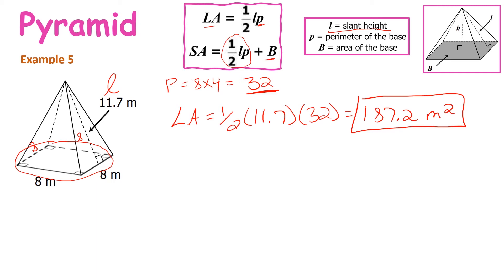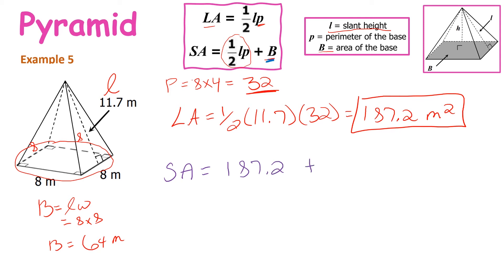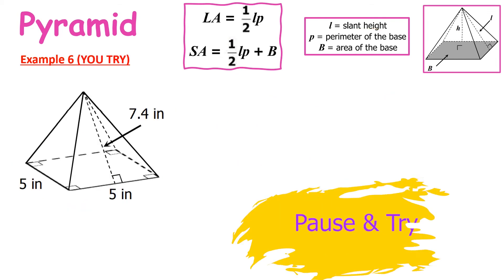Plugging into the lateral area formula: one-half times 11.7 times 32 equals 187.2 square meters. For the base area — large B is area of the base — since we have a square, it's 8 times 8 equals 64 square meters. So surface area equals the lateral area (187.2) plus the base area (64), giving 251.2 square meters for this pyramid. Go ahead and pause the video to try the practice problem.